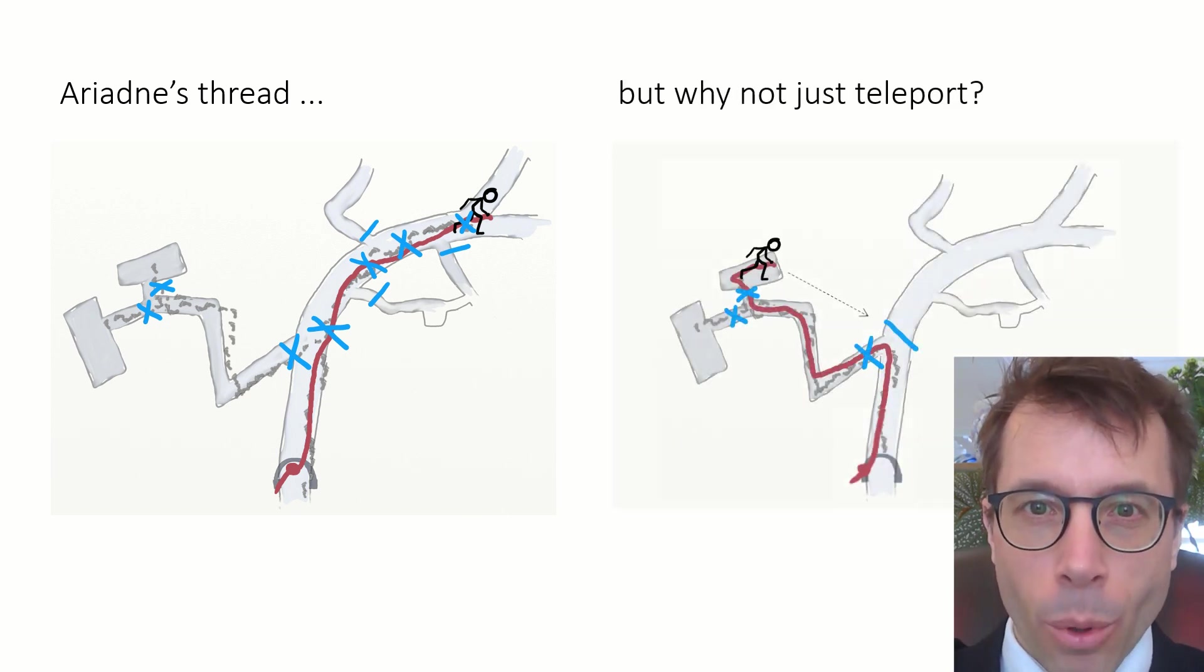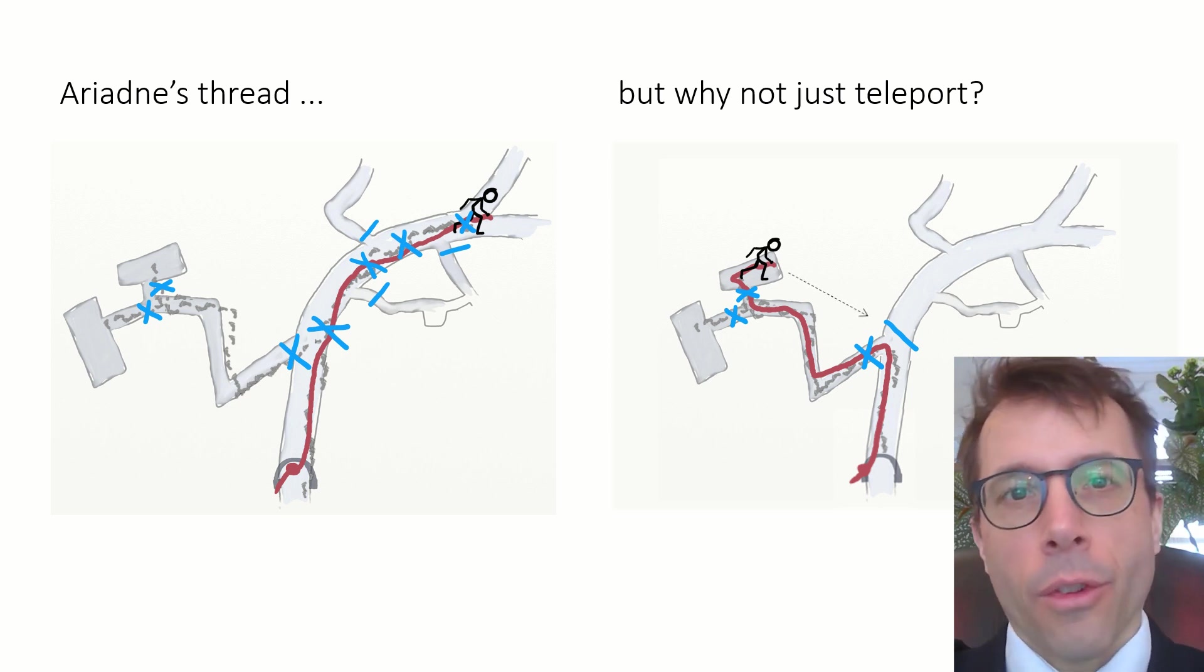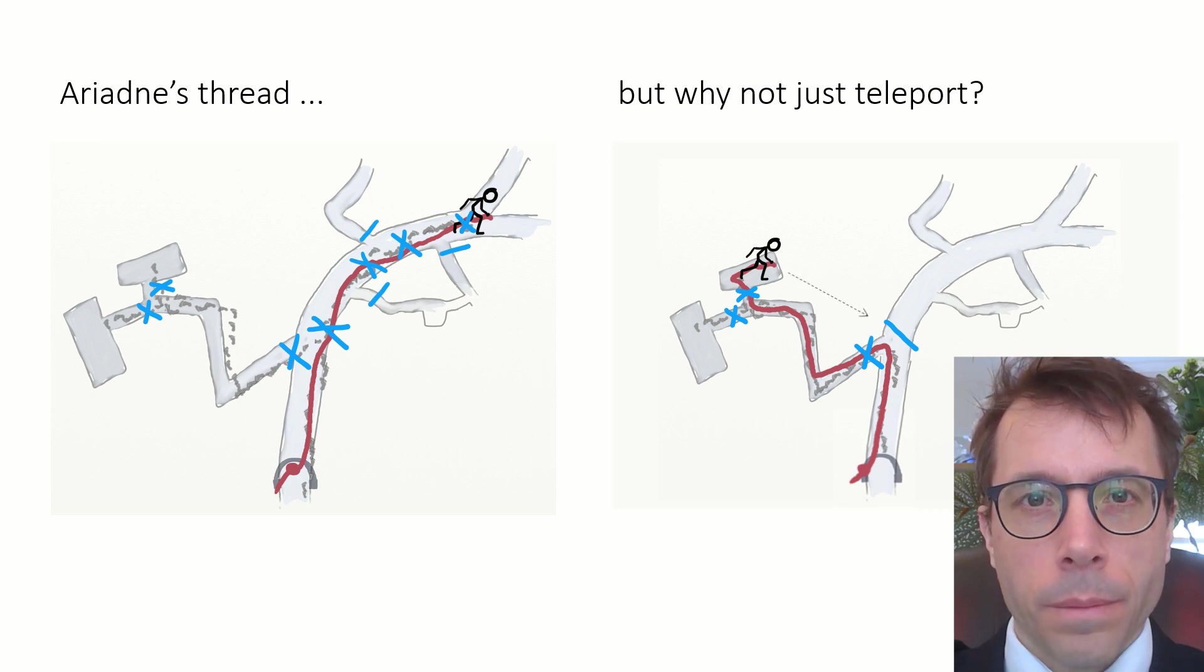But that raises a question. If Theseus had a teleport, and if he remembered the points in the maze that he was waiting to explore, in this picture he's marking the paths that he's waiting to explore with a single stroke of chalk, then why not just teleport direct to the next spot, rather than reeling in the thread? That's the spirit of the next algorithm, a version of depth-first search that doesn't use recursion.